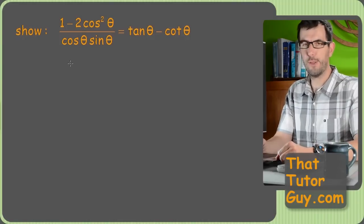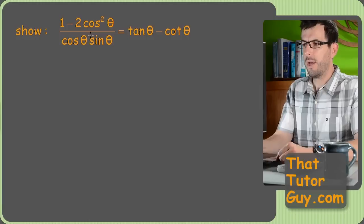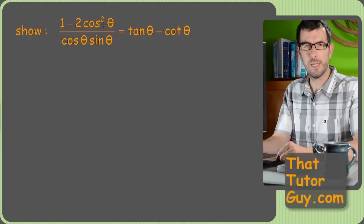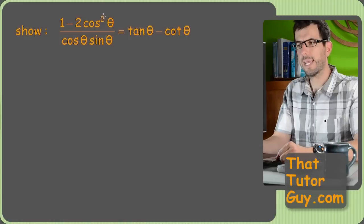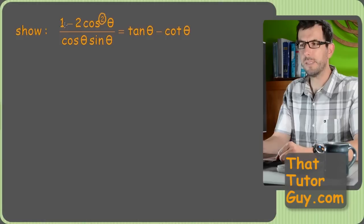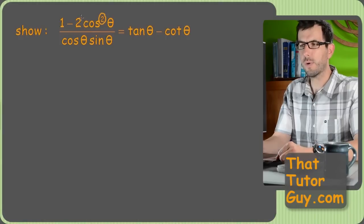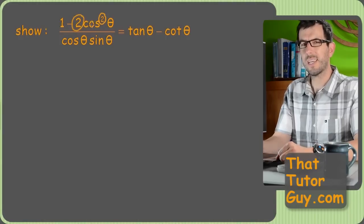So immediately I look at this and it does not look good. Everything's already in terms of sines and cosines, right? So I can't use a couple of my tricks. And then there is a cosine squared, which is great. But the problem is instead of one cosine squared, there's a two in front of it. So that kind of messes things up.